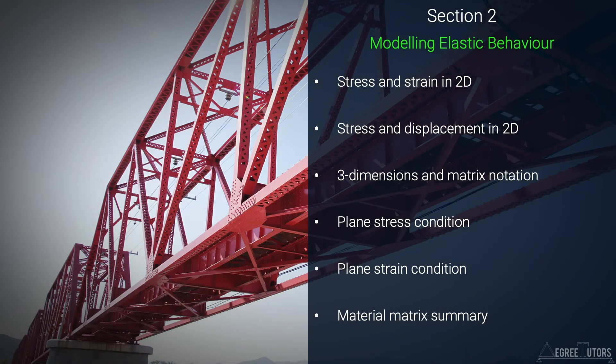The direct stiffness method and finite element methods more generally are all about building models of behavior at the element level and combining these models together using matrices to form an overall model of structural behavior. So the first step is really to get a handle on element behavior and establish some appropriate models for element behavior.